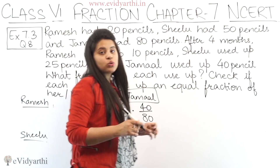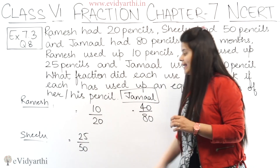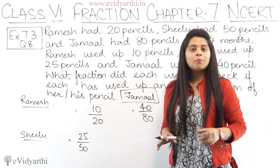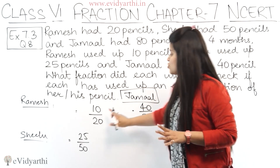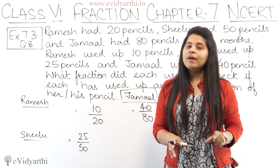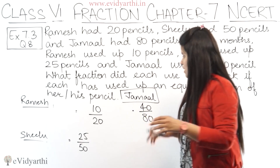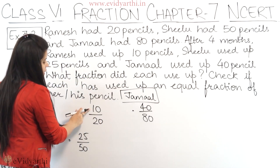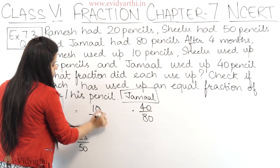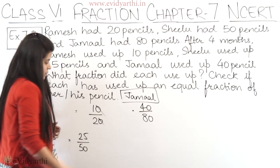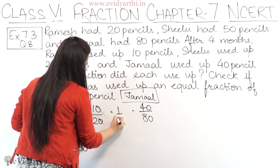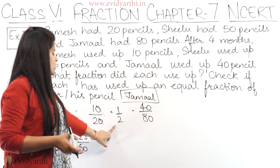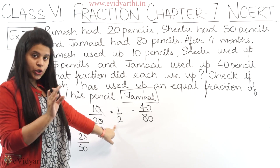So now the fractions for all three are: Ramesh's is 10 upon 20, Shilu's is 25 upon 50, and Jamal's is 40 upon 80. Now we have to check whether these three fractions are equal. To do this, we bring them to their lowest form. For 10 upon 20, we cancel the zero, and we are left with 1 upon 2. We cannot simplify 1 upon 2 further, so Ramesh's fraction is 1 upon 2.